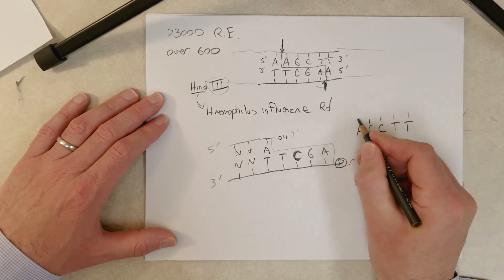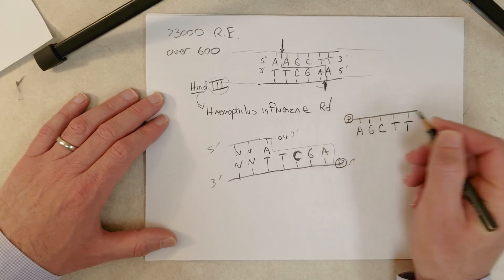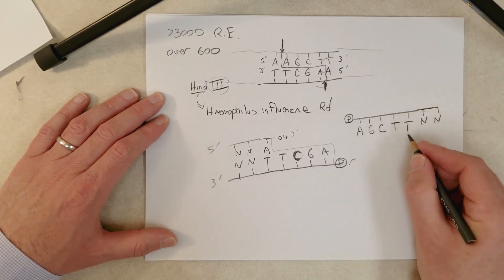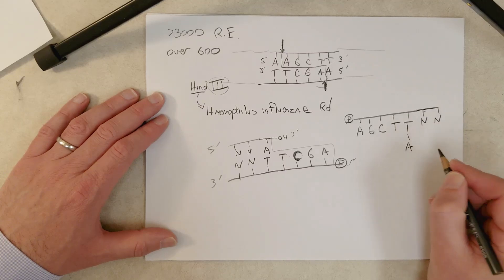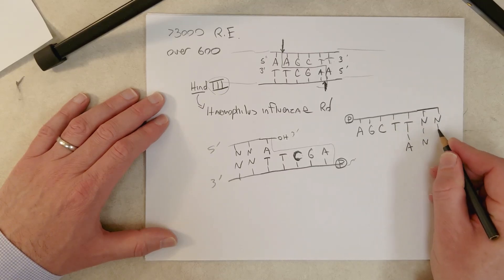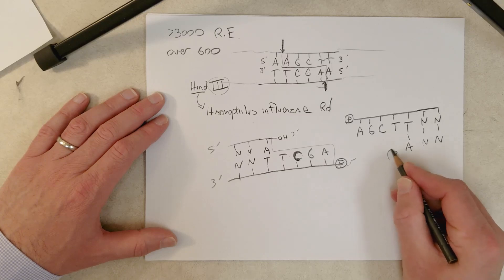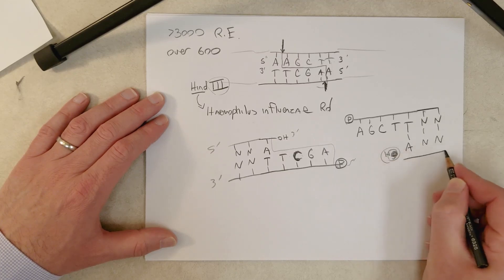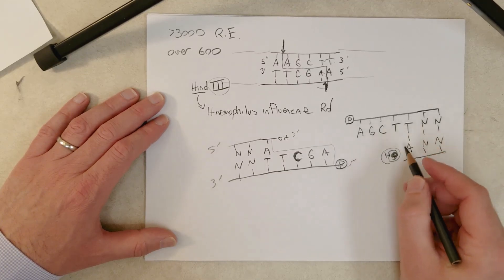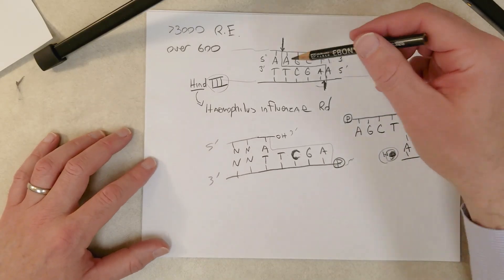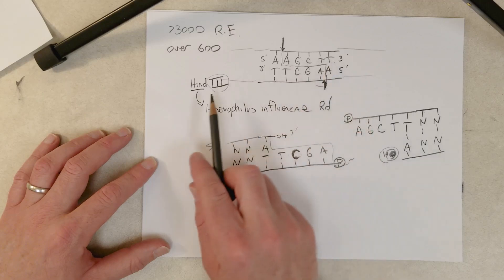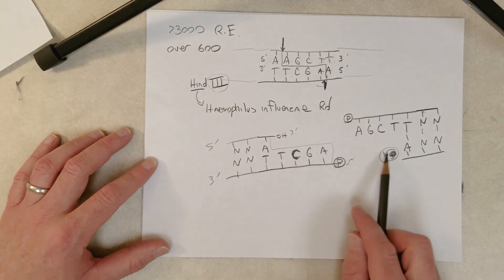So up here, AGCTT. Here's the phosphodiester backbone. Here's the phosphate group. Here are some other bases. The sequence doesn't matter. Here's the A right here. Bases down here don't matter. And this is an OH group here, because this is the three prime end.